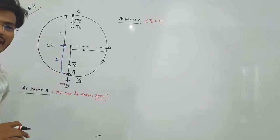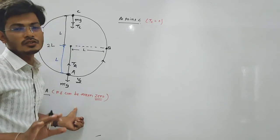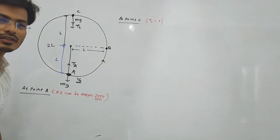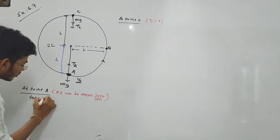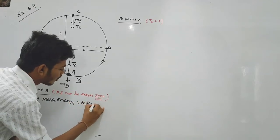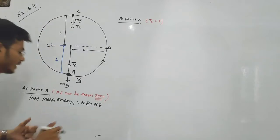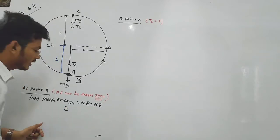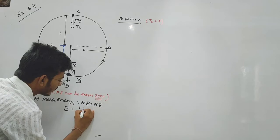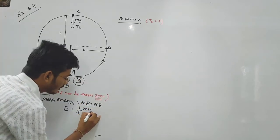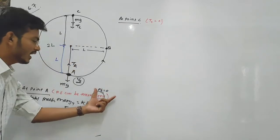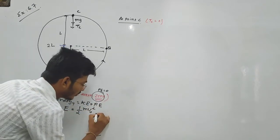At point A, the potential energy can be taken as zero. So point A is our reference level where potential energy equals zero. The next point to consider is that potential energy increases with height, taken relative to this reference.